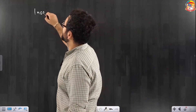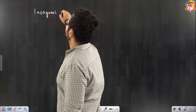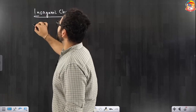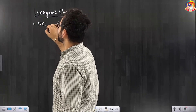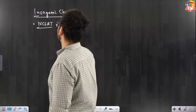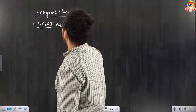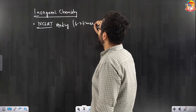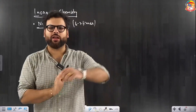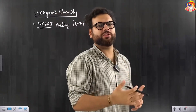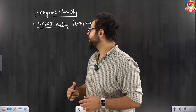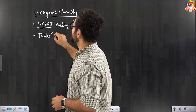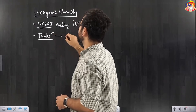In inorganic chemistry, all books — NCERT — make sure you are reading NCERT for inorganic chemistry at least six to seven times before the exam. Read NCERT seven times, and whatever tables are there — the most important ones — make sure that you make proper notes of them.